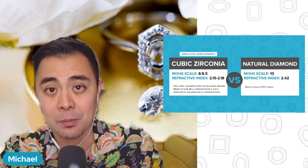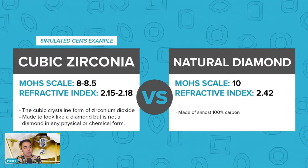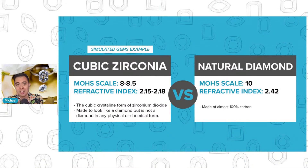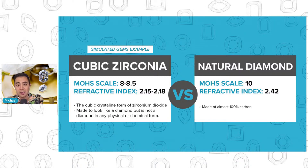Let me give you an example. Let's talk about diamonds. If we are comparing a simulated gem, such as a cubic zirconia versus a natural diamond — I'm speaking to the person that may just be in the market, may have never seen a diamond or a cubic zirconia up close and cannot decipher the difference. This information is for you. The Mohs scale measures the hardness of any gemstone. It goes from 1 to 10, 10 being the hardest. The Mohs scale for a cubic zirconia is anywhere between an 8 to 8.5, whereas a natural diamond is a 10 out of 10.